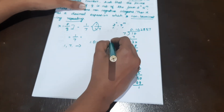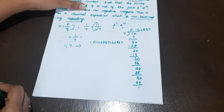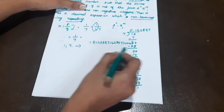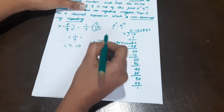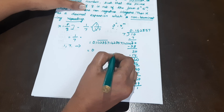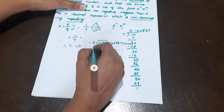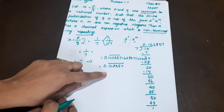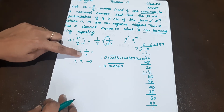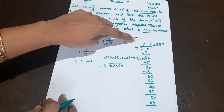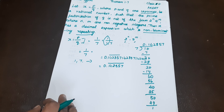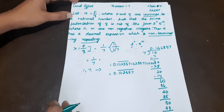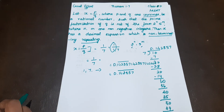We started with 1 and we are back to 1, confirming the repeating pattern. This is 0.142857 repeating. So q is not of the form 2 raised to the power n, 5 raised to the power m, and the decimal expansion is non-terminating repeating — this is Theorem 1.7. Please subscribe, share, like, and comment. Thank you.